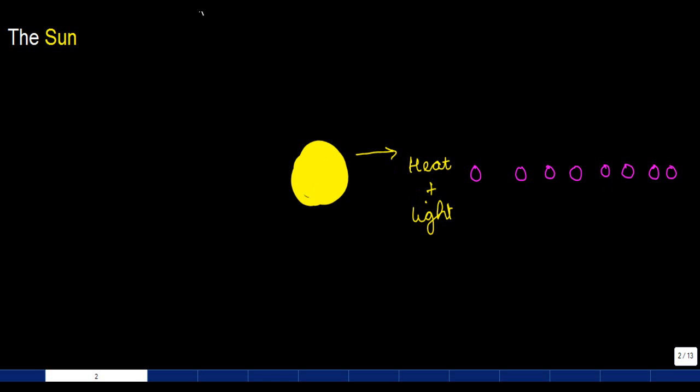But what exactly is the Sun? The Sun is made up of hot gases - very hot gases. The Sun keeps all these planets together. The Sun is the binding force.